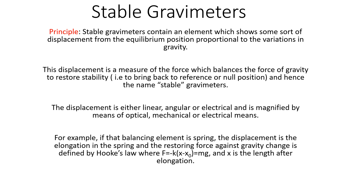The restoring force tries to bring the instrument back to the reference or null position — that is, the stability of the instrument is restored — and so these gravimeters are referred to as stable gravimeters. Since the displacements are very small and proportional to small changes in gravity, the displacement can be linear, electrical, or angular, and is magnified by optical, mechanical, or electrical means so that it can be readily detected. Let us consider a simple case where a spring is the balancing element suspending a mass.